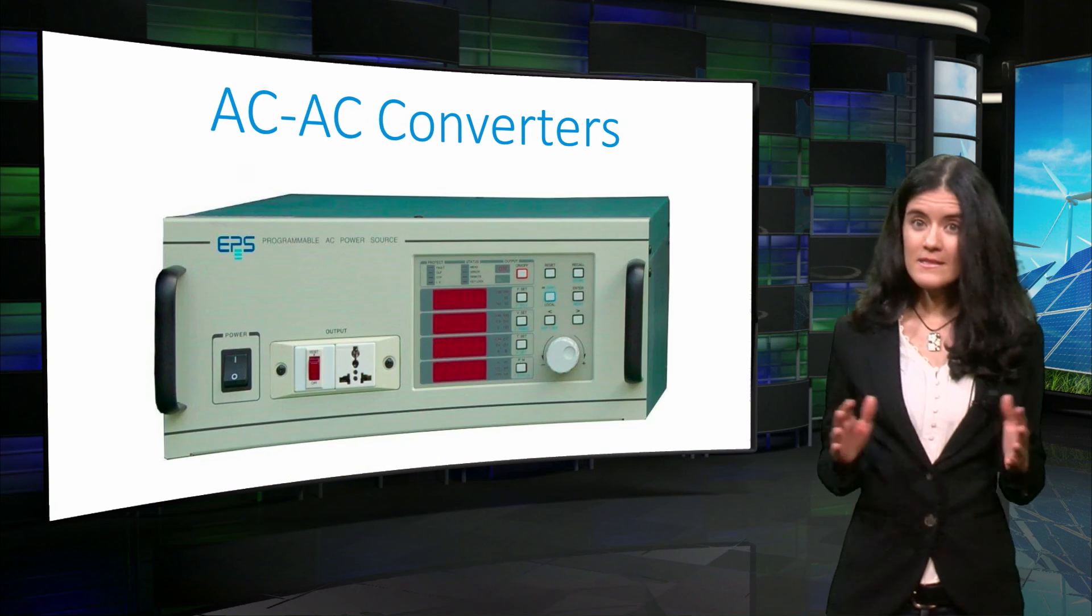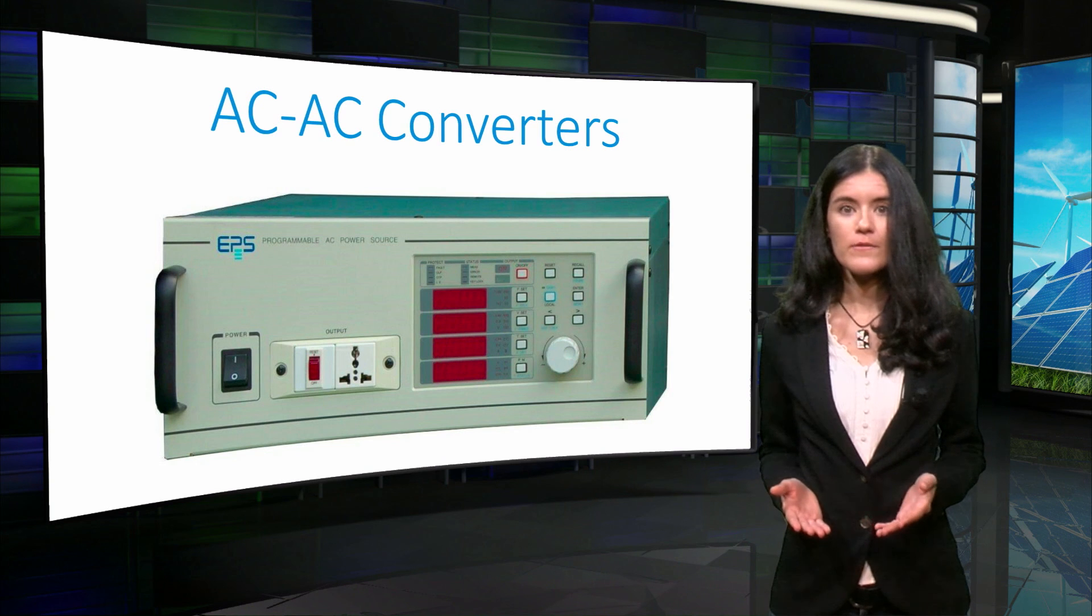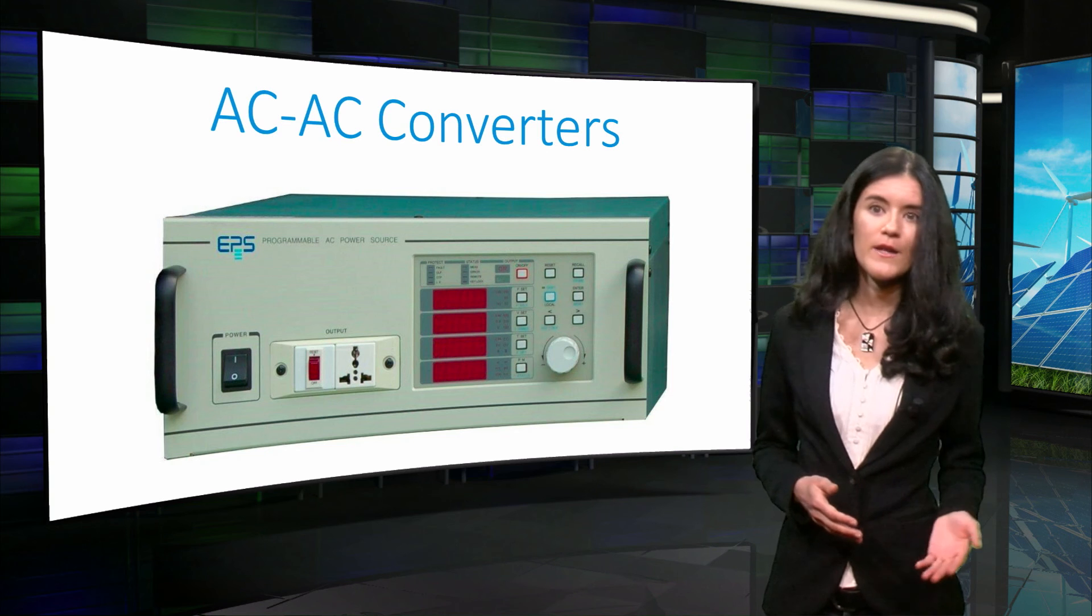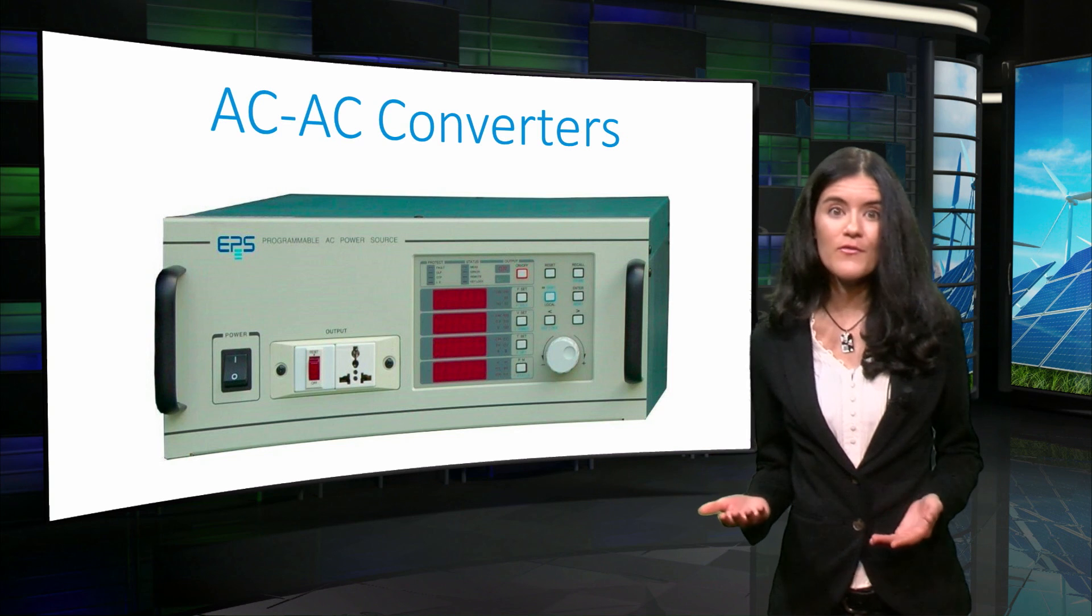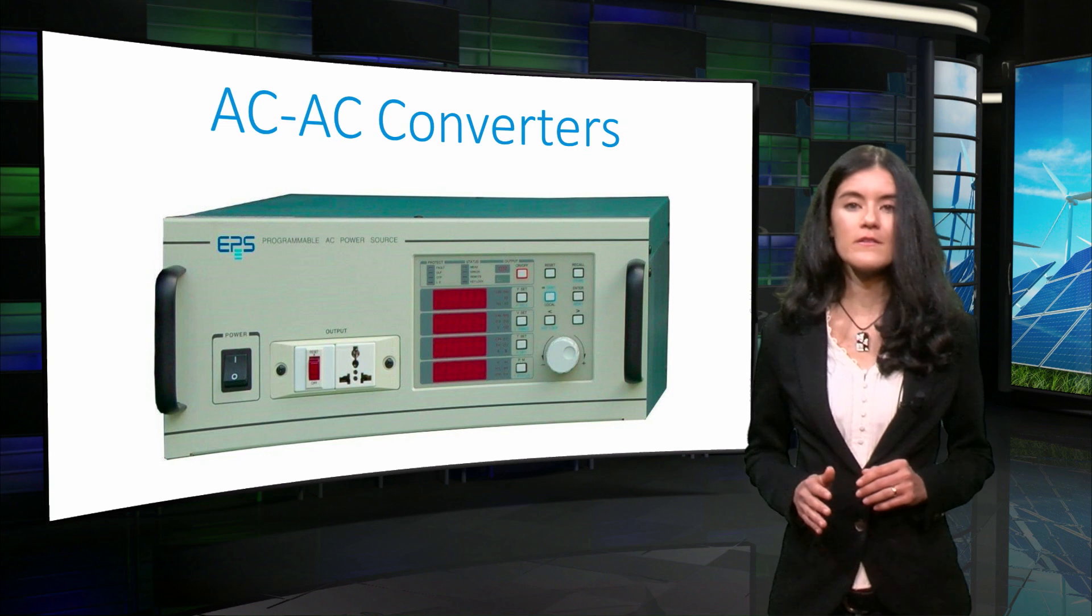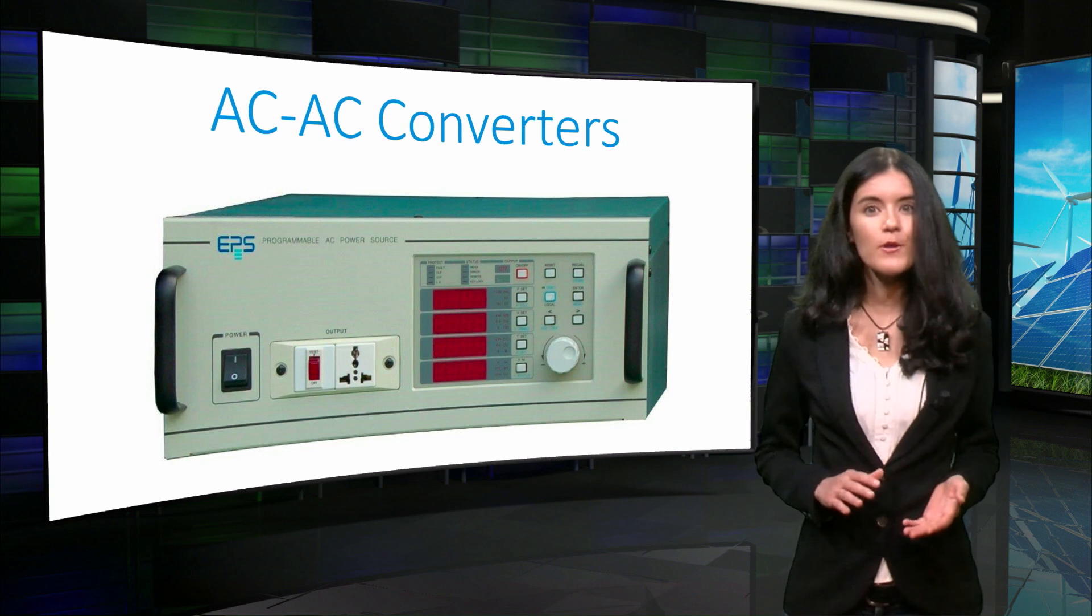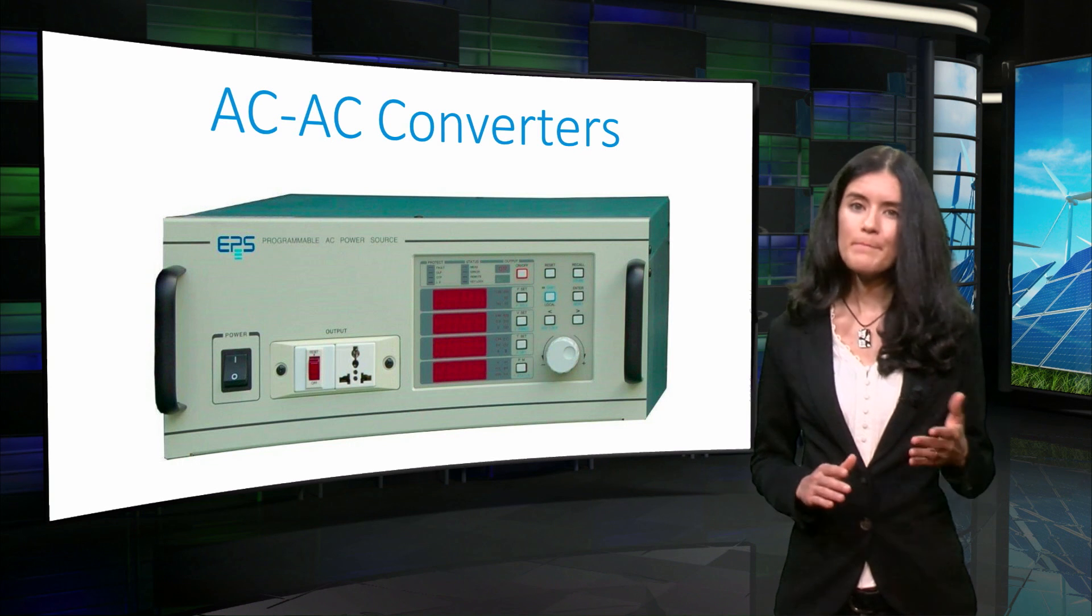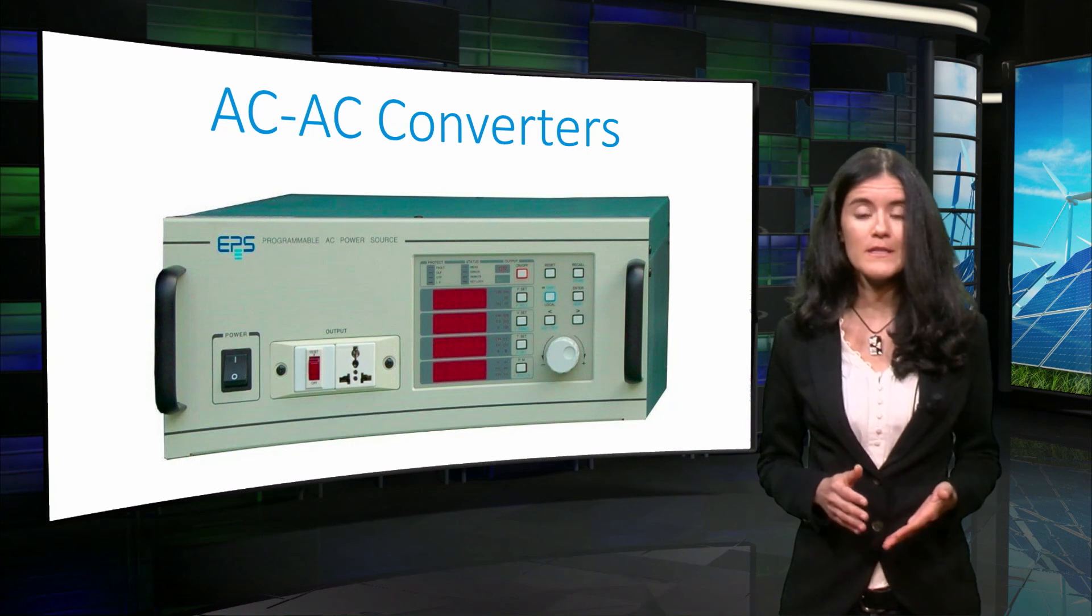The last type of converters is the AC-AC power converter. This converter is used to convert an AC waveform into another AC waveform at different voltage levels or frequency, without any intermediate DC conversion. The principle of operation of this converter is outside the scope of this course, but it was worth mentioning its purpose.